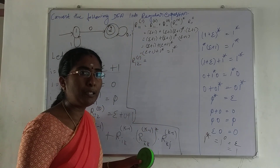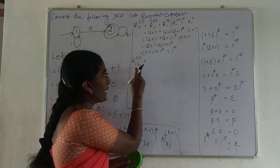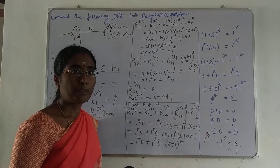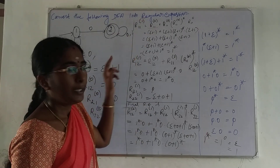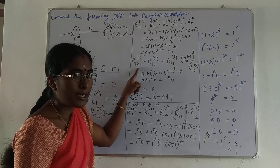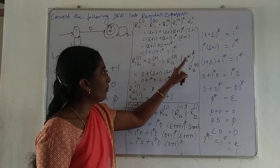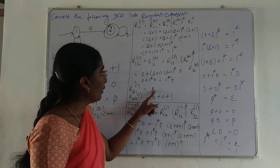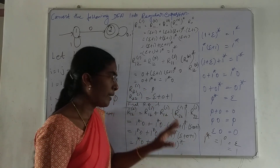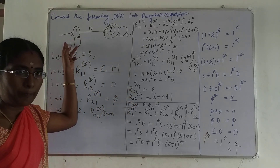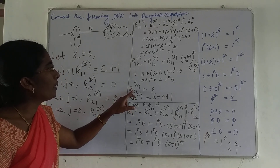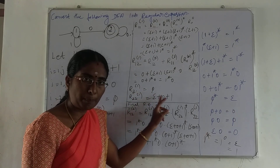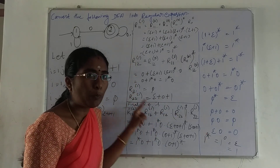Next, find R12¹ (I=1, J=2, K=1): expanding the formula with the derived values gives R12¹ = 1*0. For R21¹: using the same formula, since there is no transition from state 2 to 1, after substituting the formula the result remains R21¹ = ∅. Last, R22¹ = epsilon + 0 + 1.